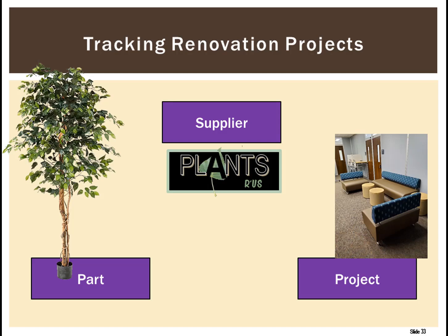There are also quaternary relationships which bring four entity types together, and so on. Let's envision a renovation project at a typical university. We want to track information about the projects — a project renovates a space in a building, like the Robinson Building. When we renovate that space, we use various parts: tables, chairs, or perhaps a lovely plastic ficus tree. Those parts come from various suppliers — Plants Are Us has a wide selection of plastic ficus trees.